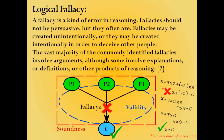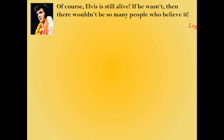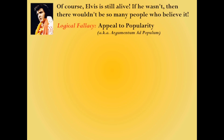I'd like to wrap up this video with a few examples of some commonly committed fallacies. "Of course Elvis is still alive. If he wasn't, then there wouldn't be so many people who believe it." This is the classic appeal to popularity, or argument ad populum. This kind of argument attempts to affirm the conclusion through sheer popularity of belief. This is fallacious, because just because a lot of people believe it doesn't mean it's necessarily true.